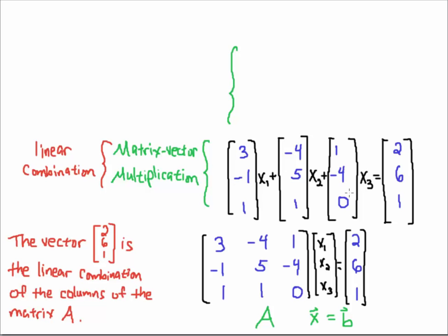That's what we're doing here. This matrix-vector multiplication is called a linear combination. So what we're saying when we have a linear system is that the vector 2, 6, 1 is a linear combination of the columns of this matrix.